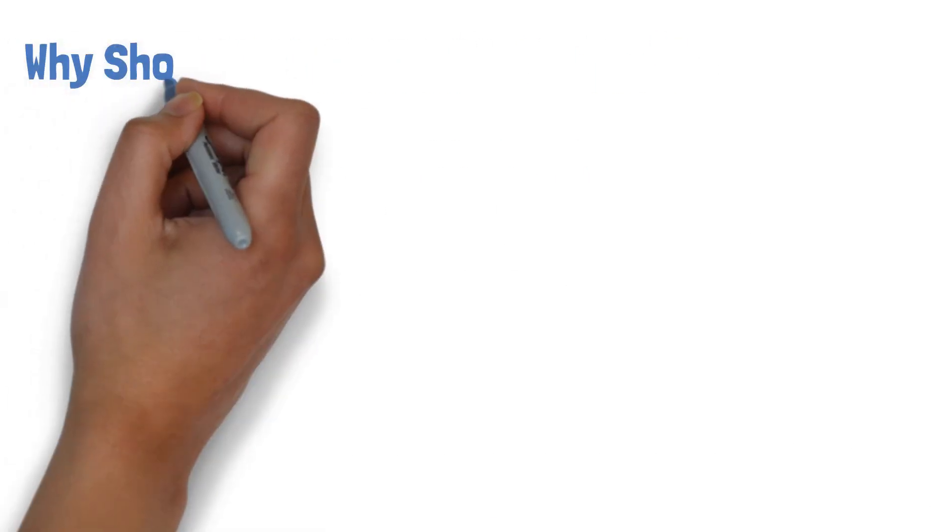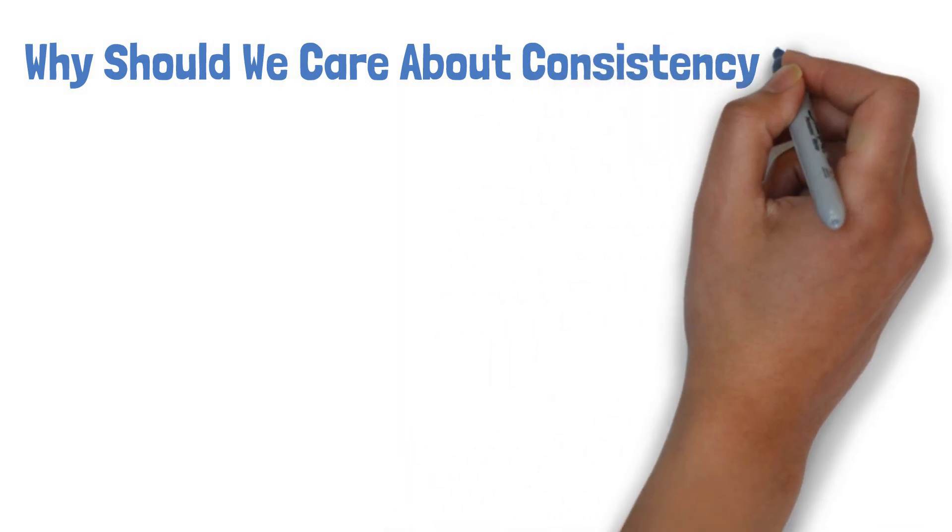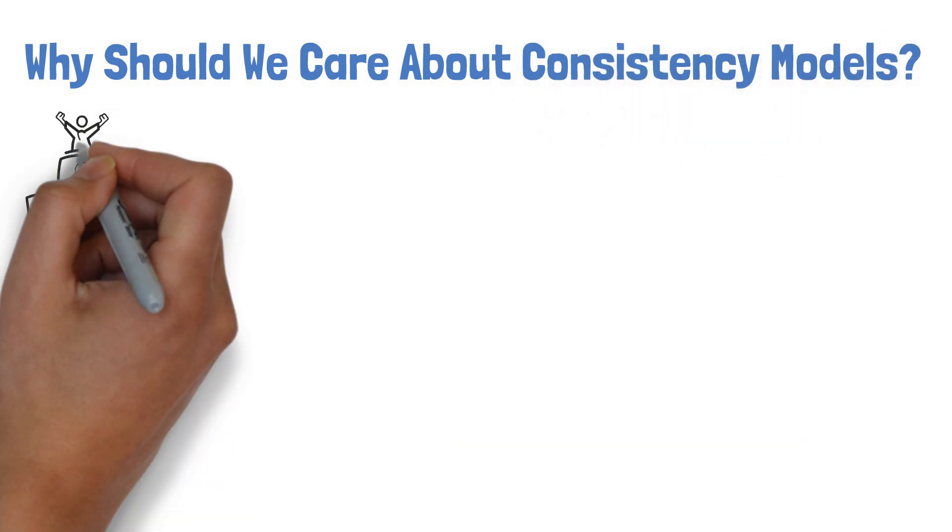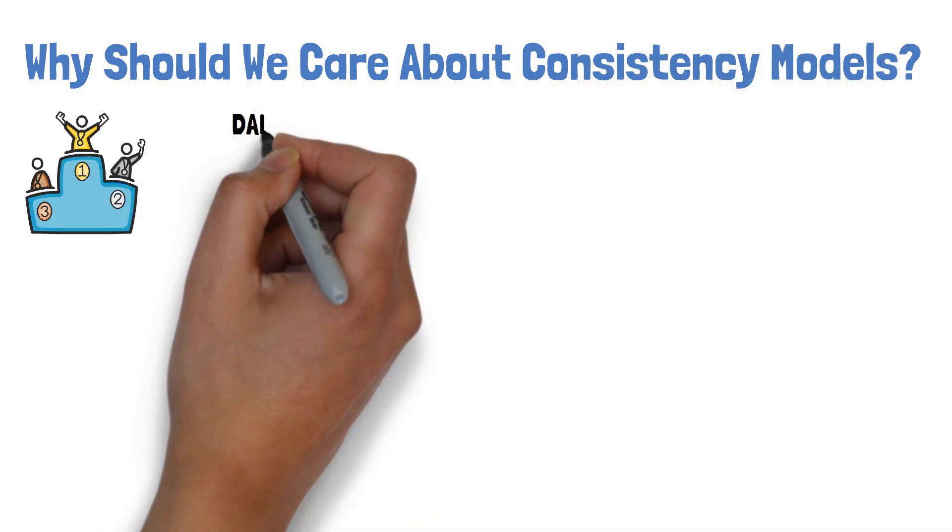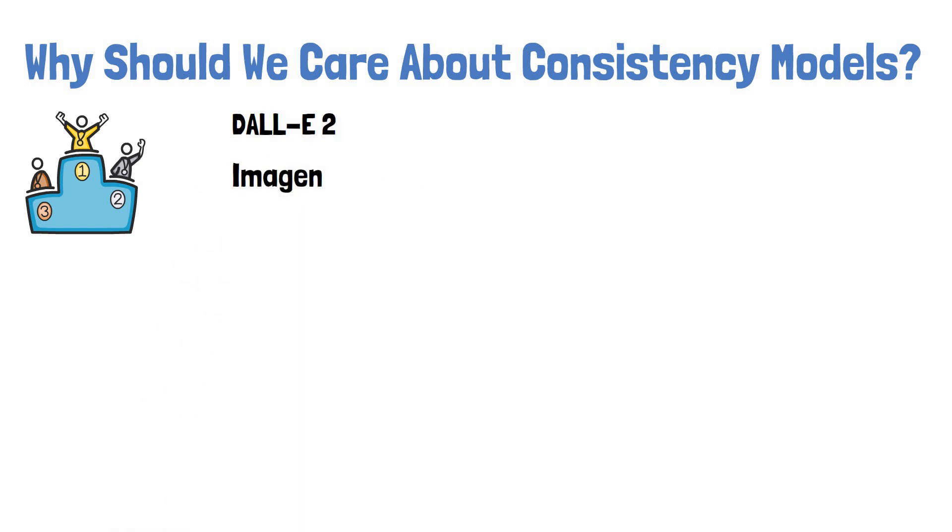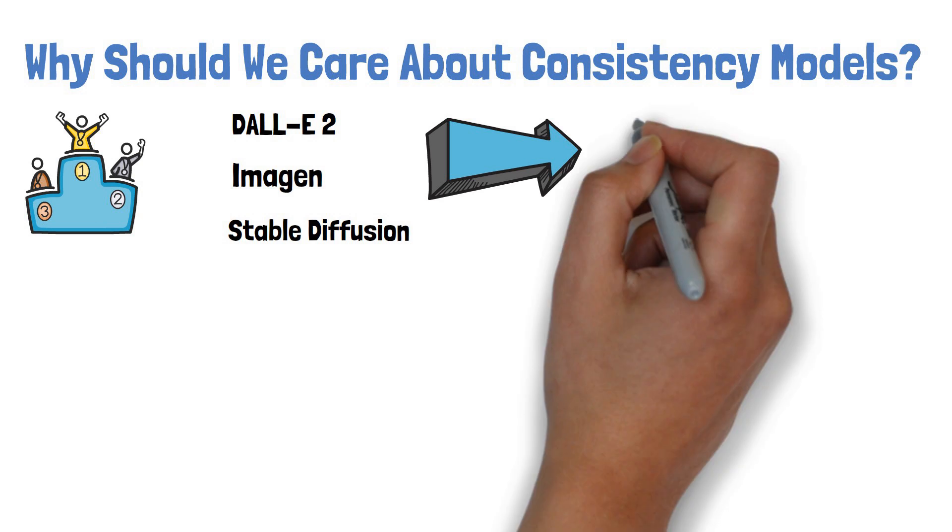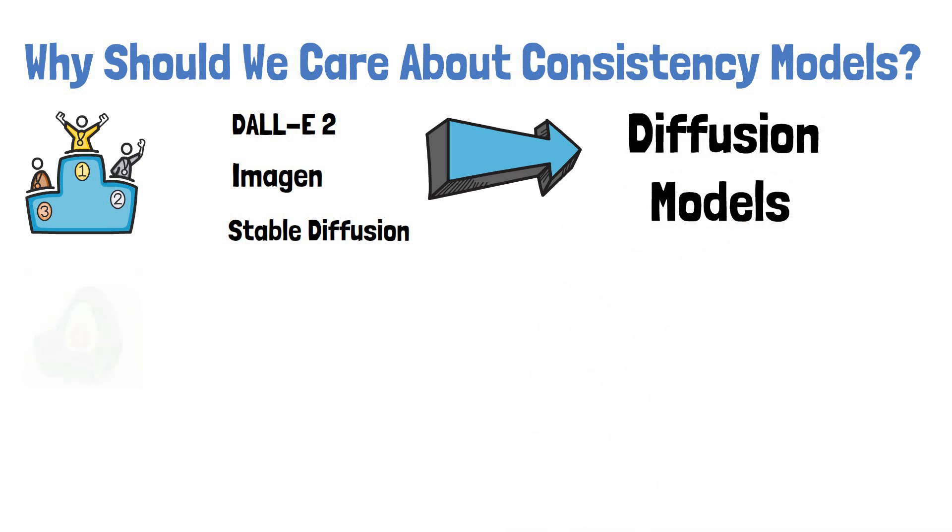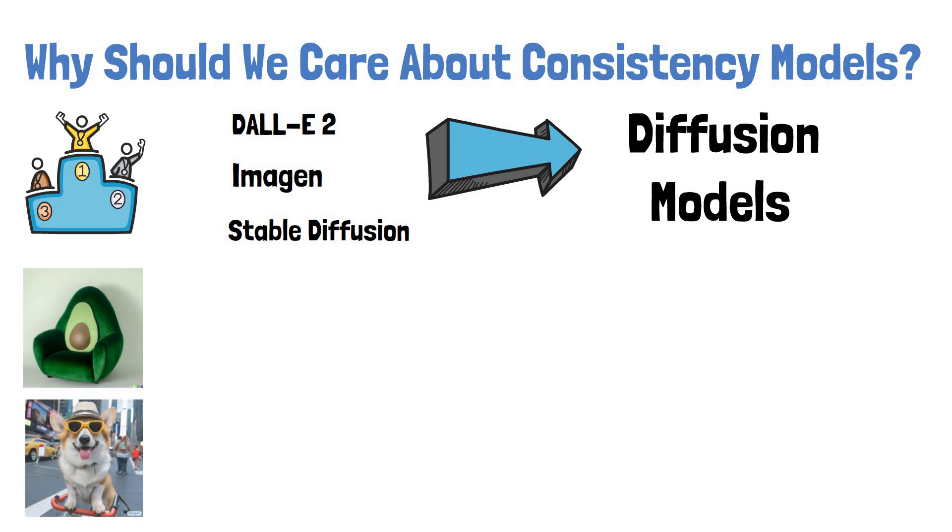Let's start by asking why should we care about consistency models? Well, dominant image generation models such as DALL-E 2, Imagen, and Stable Diffusion are based on a type of generative models called diffusion models. These models are able to generate amazing results such as this avocado chair and this cute dog, but they have a drawback which consistency models can help to solve.